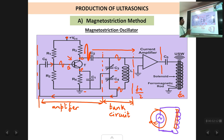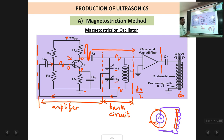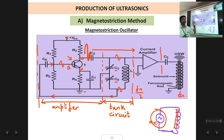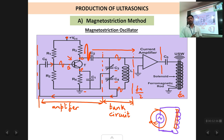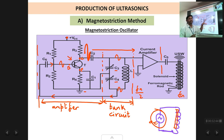So this is the general circuit of a magnetostriction oscillator. It has a tank circuit which generates AC sine wave signals, an amplifier circuit which raises the voltage level, a current amplifier which raises the current level — because more current means greater magnetic field strength from the solenoid — and finally the AC signal is applied to the solenoid where the vibrating rod actually produces the ultrasonic waves.